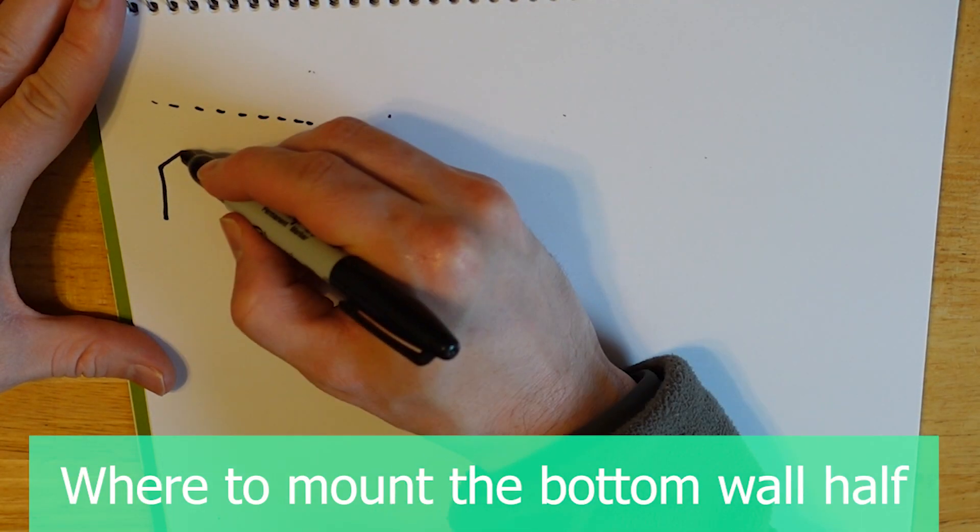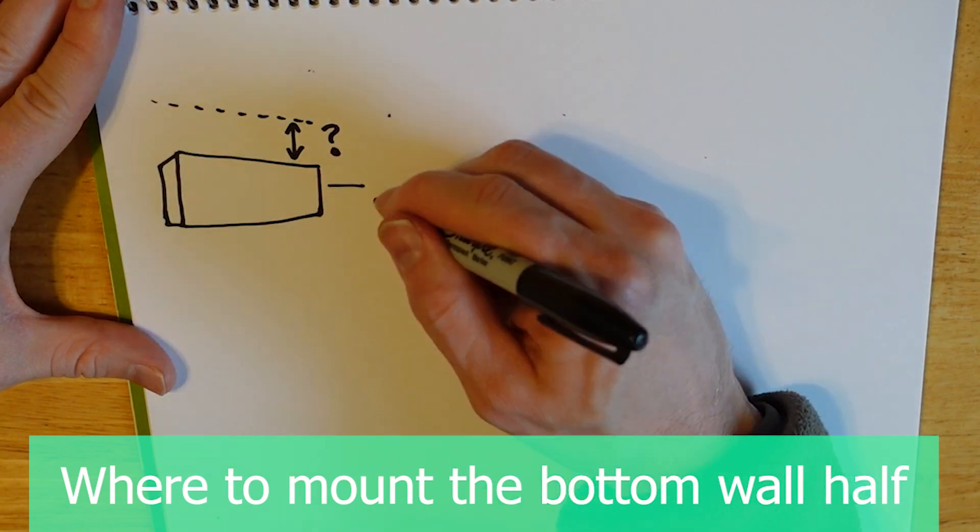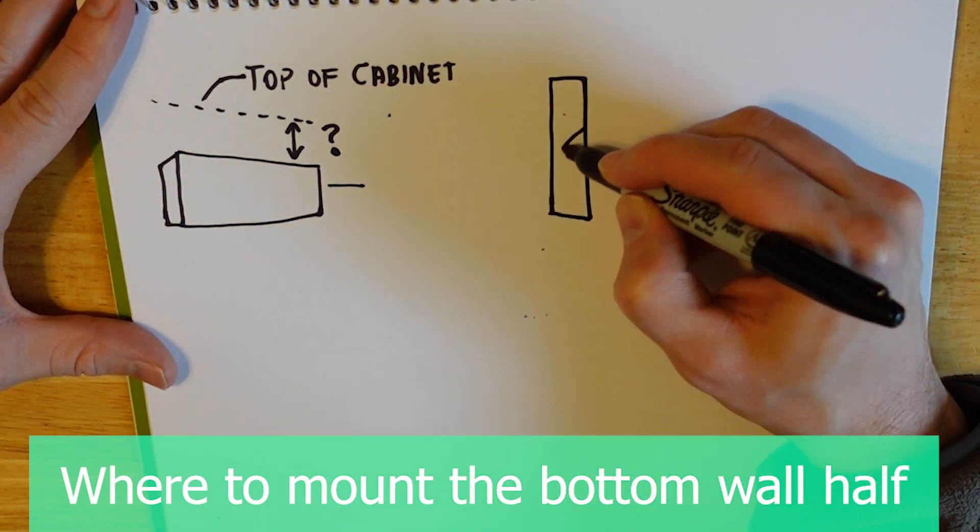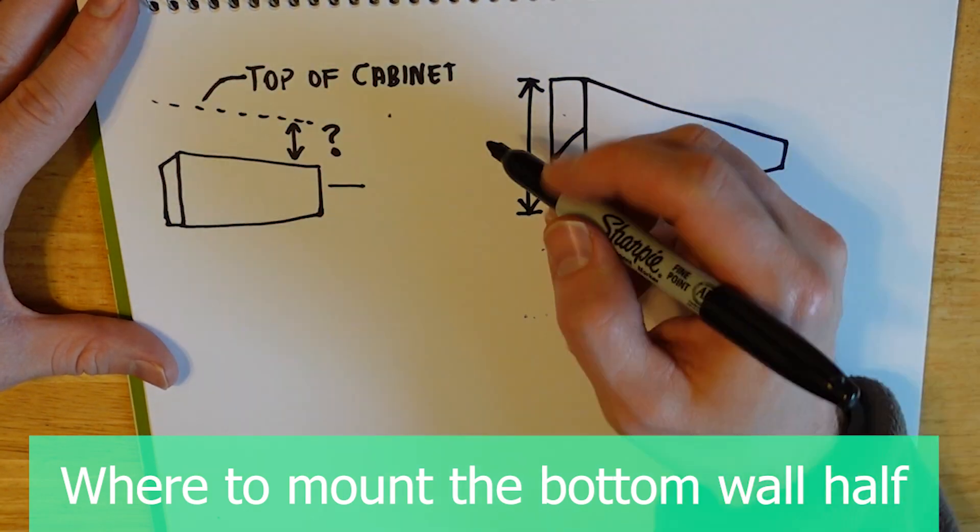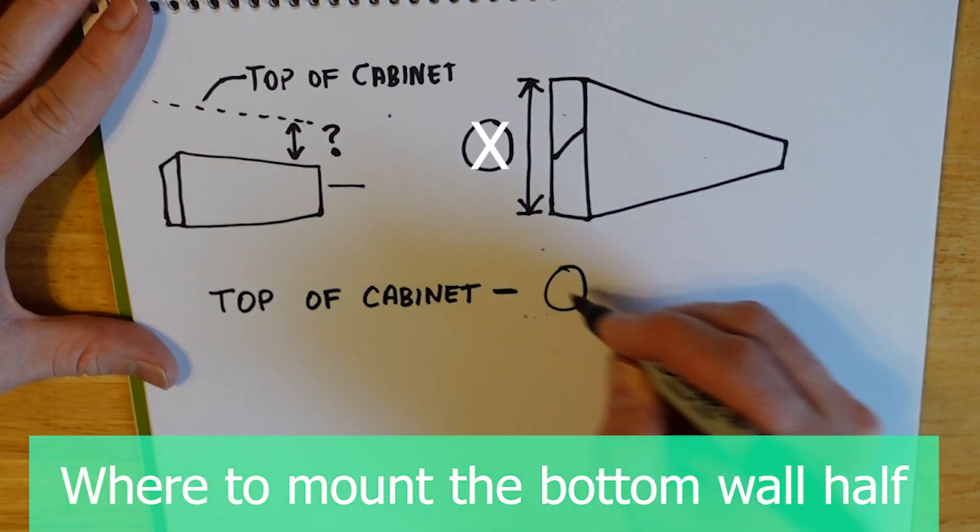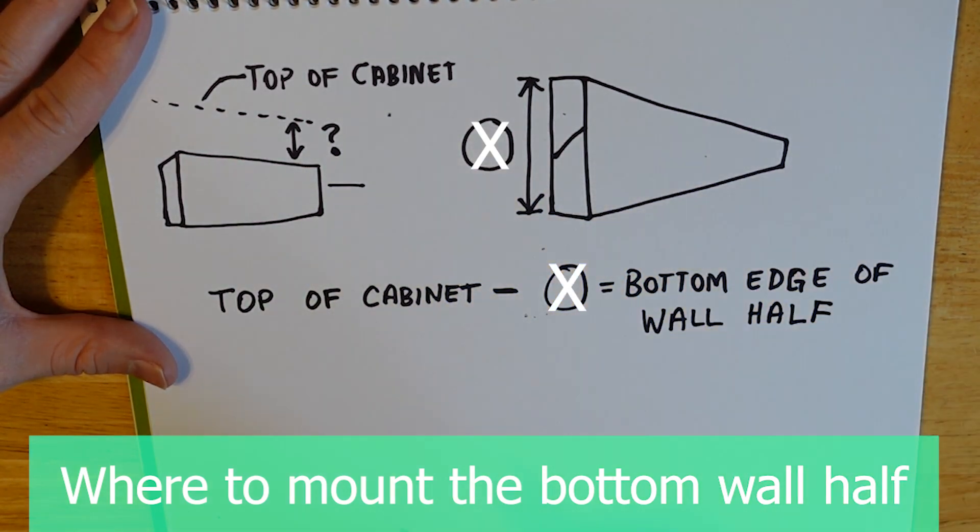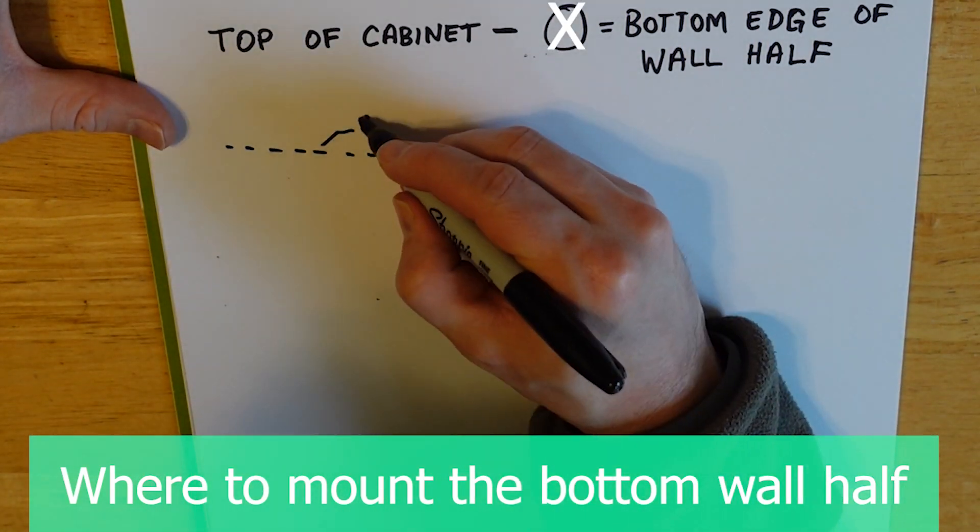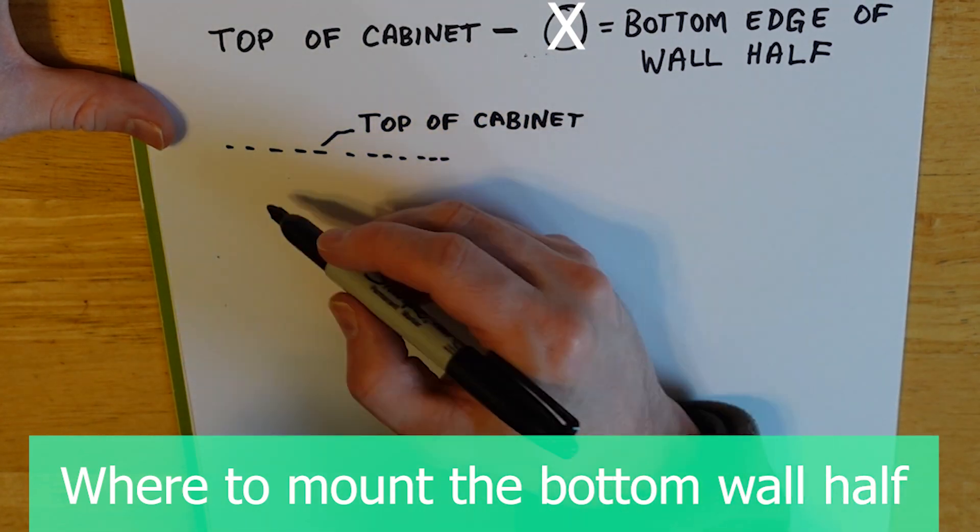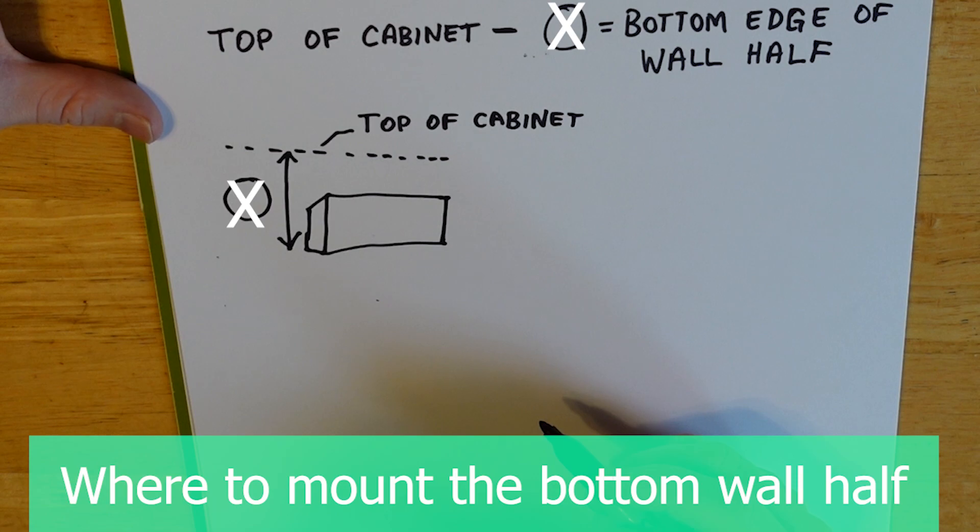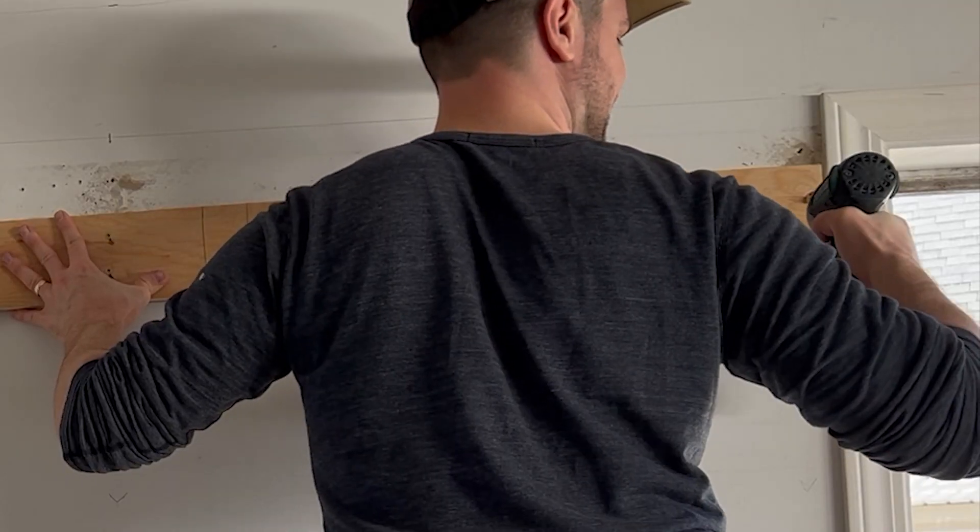Next we want to know where to mount the wall portion of the French cleat. Note where you're going to put the top of your cabinets and the width of the plywood before it was cut, that's X. Take the top of the cabinet measurement minus X measurement, and that will tell us where the bottom edge of the wall half goes. Here we have the top of the cabinet, there's X, and we measure down, that's where our wall cleat goes.